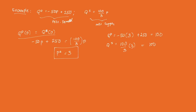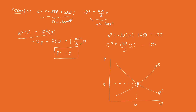Graphically, we return to the basic supply and demand diagram, with P on the vertical axis and Q on the horizontal axis. We have the demand curve QD and the supply curve QS, and they intersect at the equilibrium point where the price is 3 and the quantity supplied and demanded is 100. That is short-run equilibrium.